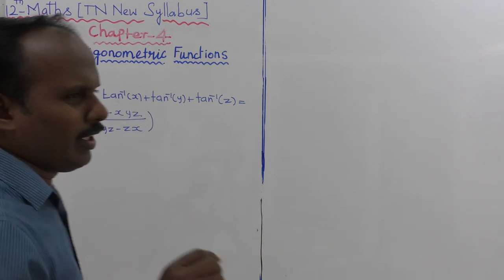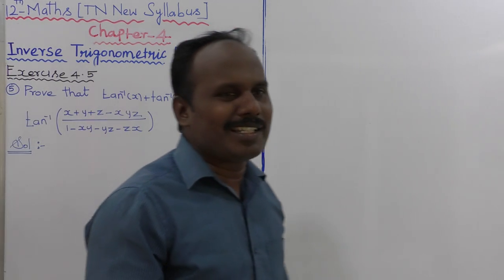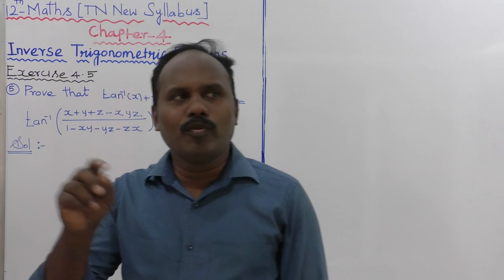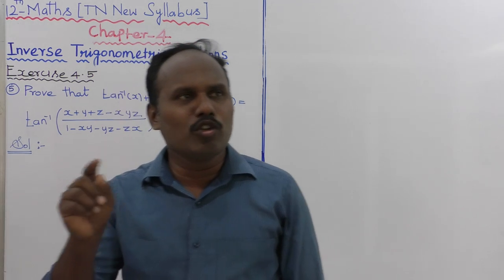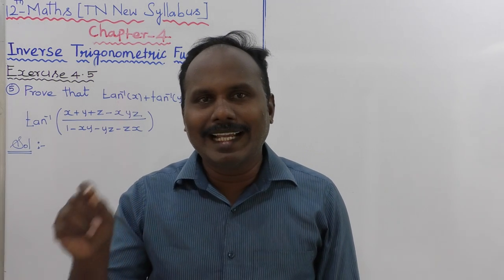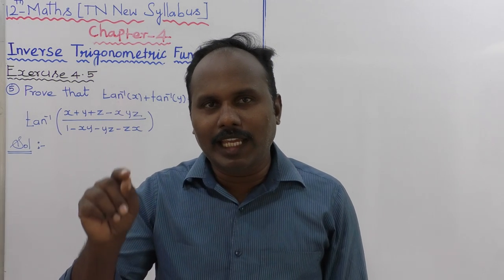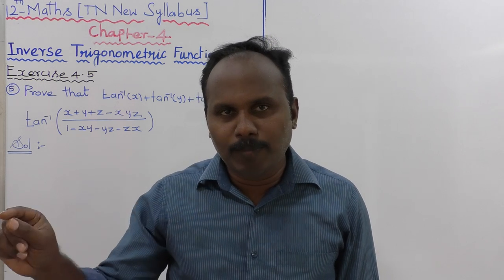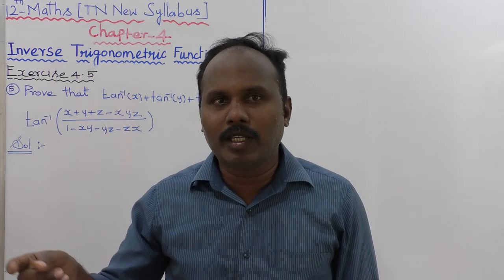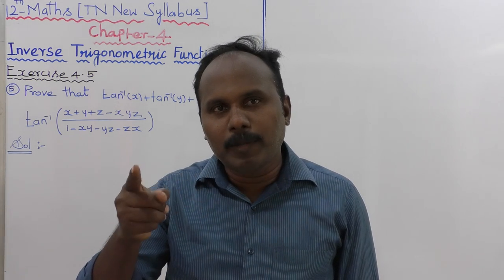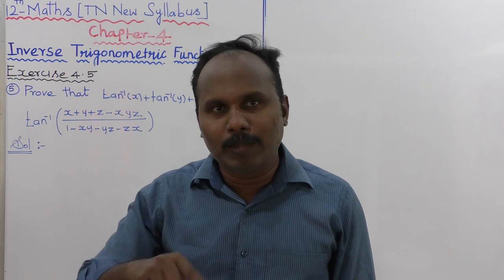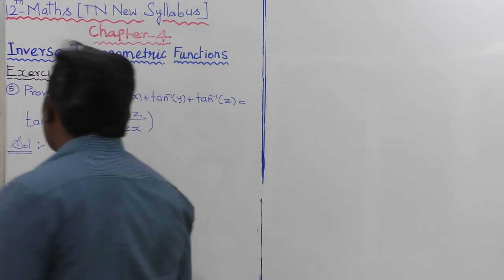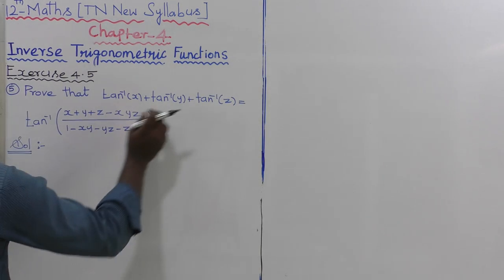Because the formula for tan inverse of a plus or minus tan inverse of b is: tan inverse of a minus b divided by 1 plus ab, or a plus b divided by 1 minus ab. That is the formula.